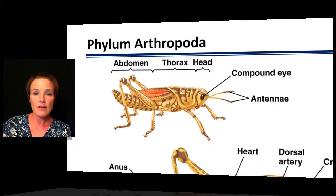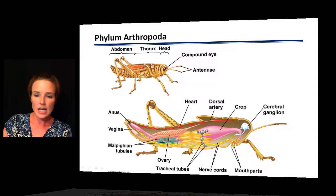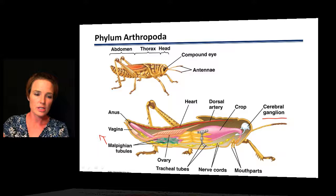Looking at an example of an insect's body plan, we can see the three body sections: the head, the thorax, and the abdomen. Insects also have fairly complicated compound eyes. Additionally, we have the cerebral ganglion, which would be the brain section of the insect, and what are called Malpighian tubules, which are used for waste removal.